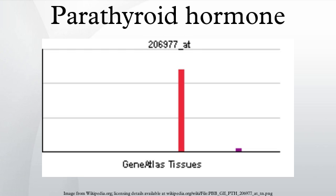In the intestines, absorption of both calcium and phosphate is mediated by an increase in activated vitamin D. The absorption of phosphate is not as dependent on vitamin D as is that of calcium. Vitamin D synthesis: PTH increases the activity of 1-alpha-hydroxylase enzyme, which converts 25-hydroxycholecalciferol to 1,25-dihydroxycholecalciferol, the active form of vitamin D.